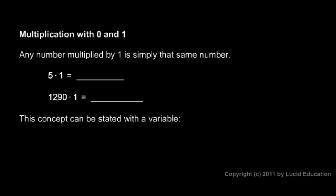You should understand multiplication with 0 and 1. Any number multiplied by 1 is simply that same number. So 5 times 1 equals 5. 1290 times 1 equals 1290.